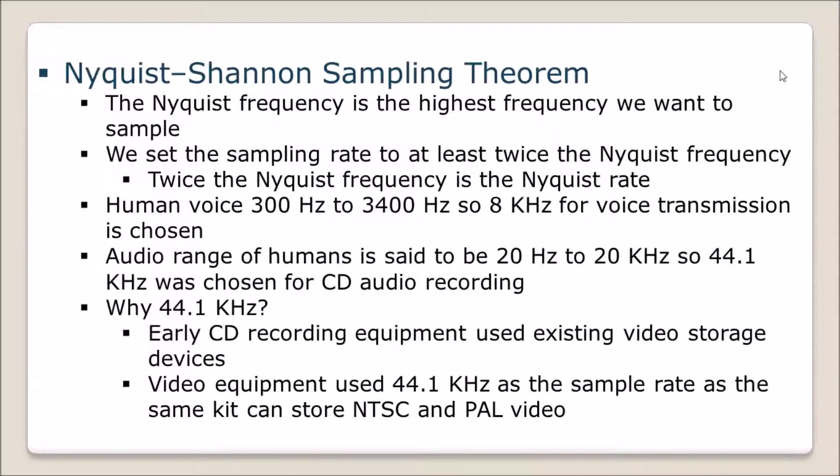However, when we sample audio music, we need to take into account the entire range of human hearing—20 hertz up to 20 kilohertz. So we choose a rate of 44.1 kilohertz. Why 44.1 and not 40 kilohertz? To understand that, we need to look at the early days of CD audio recording. Rather than invent completely new equipment, they adapted existing video storage devices. 44.1 kilohertz happens to be a rate by which we can store NTSC and PAL video formats on the same equipment. That's why we choose 44.1 kilohertz.